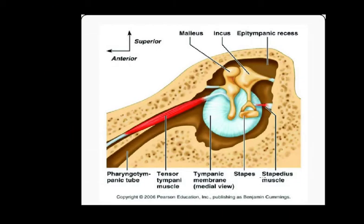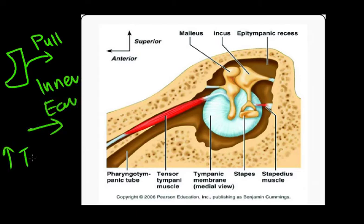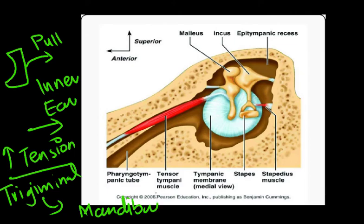Here you can see the stapedius muscle, the footplate, and the pharyngotympanic (Eustachian) tube, as well as the tensor tympani. The function of the tensor tympani is to pull the tympanic membrane toward the medial side — the inner ear side — thereby increasing tension in it. However, its nerve supply is different from the stapedius; it is supplied by the 5th nerve, the trigeminal nerve, specifically the mandibular branch, which is responsible for the movement of the tensor tympani muscle.